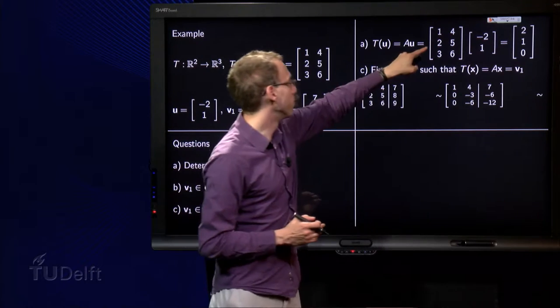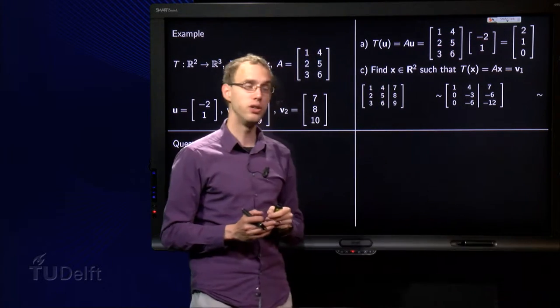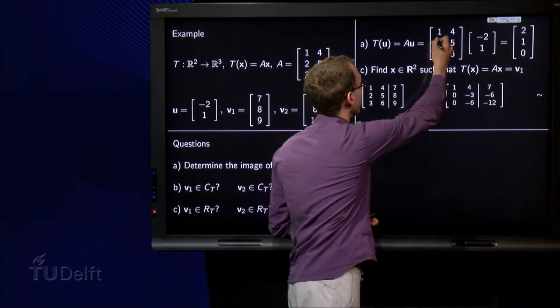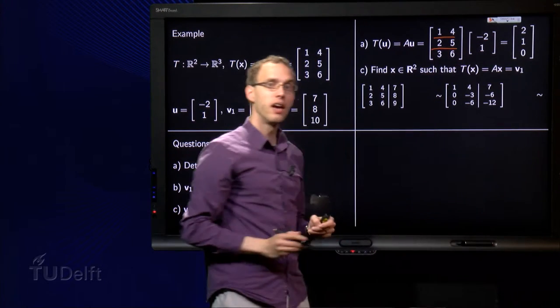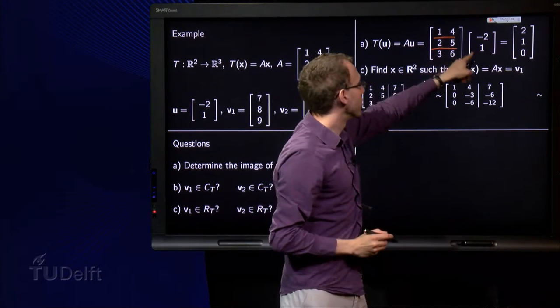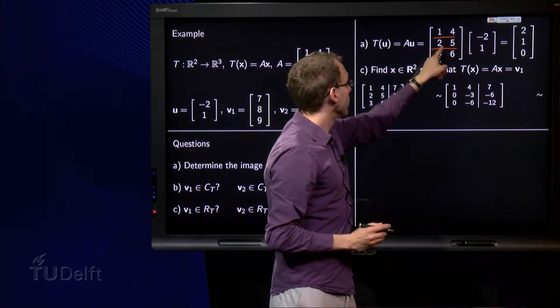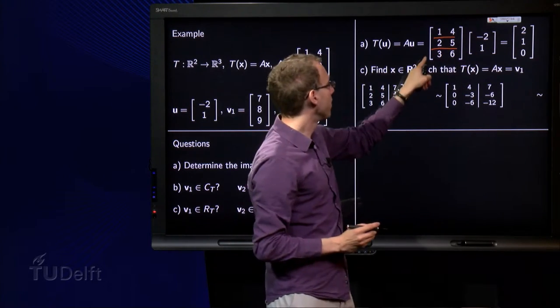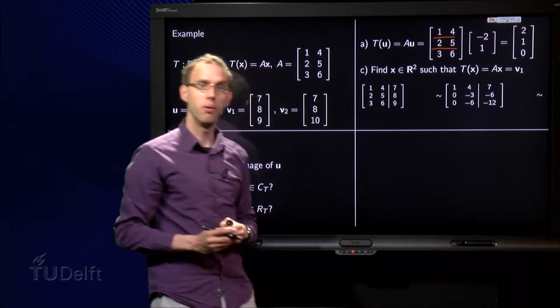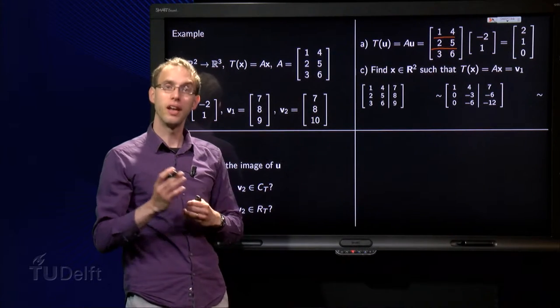So we have to compute the product matrix A times the vector u. Use the row column rule as usual, and then we find -2 plus 4 equals 2, -4 plus 5 equals 1, and -6 plus 6 equals 0. So there you go, the image of u.